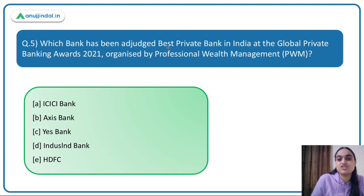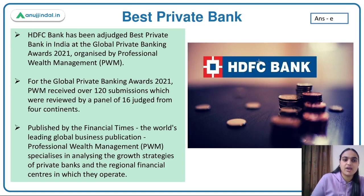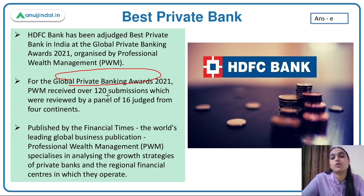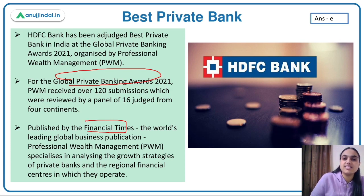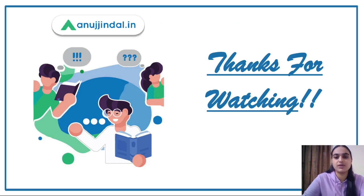The last question: which bank has been awarded the best private bank in India at the Global Private Banking Awards 2021, organized by Professional Wealth Management — a magazine published by the Financial Times? Around 120 submissions were assessed by a 16-judge panel from four continents. HDFC Bank has been awarded the best private bank in India. This concludes today's session — thank you.